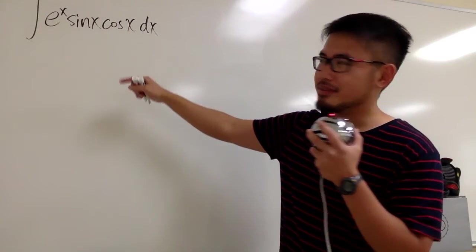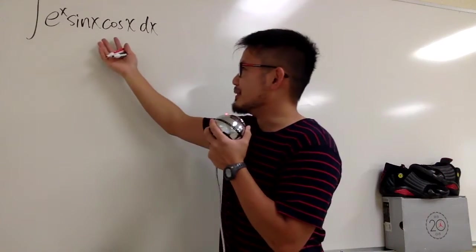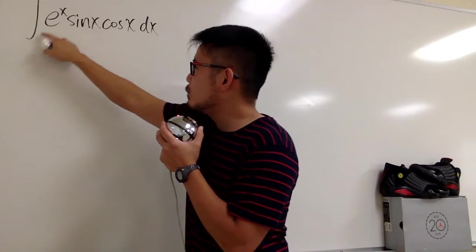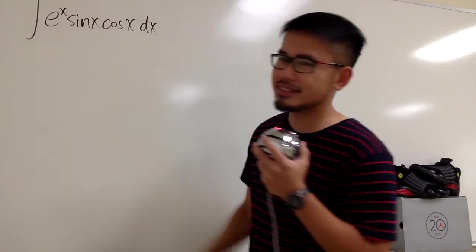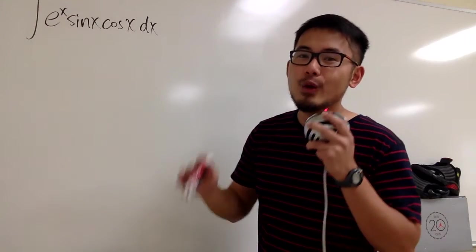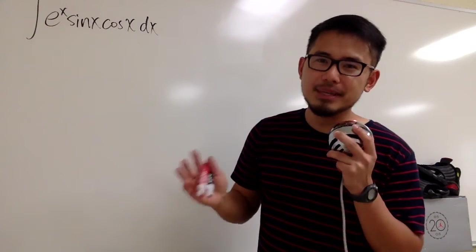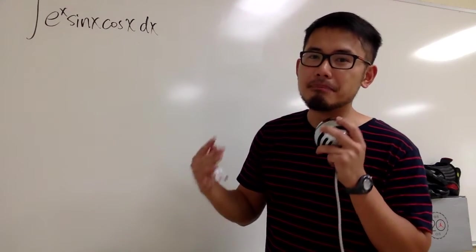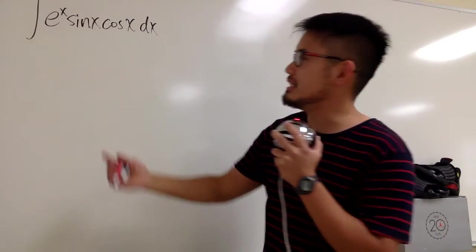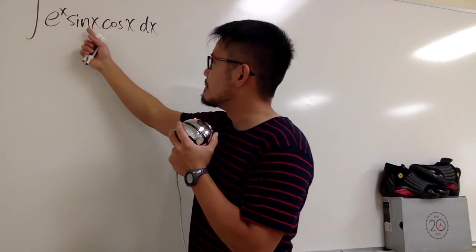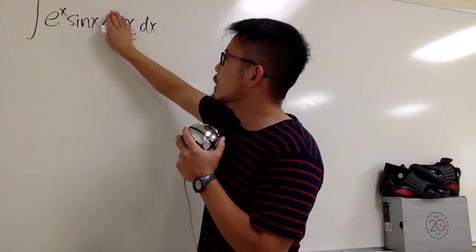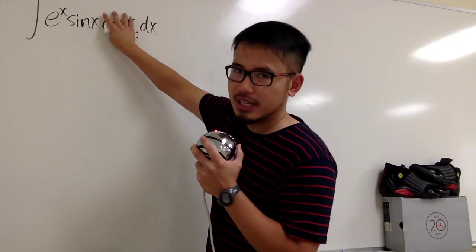This integral should be crazy enough, at least by the look. We have the integral of e to the x times sine x times cosine x. We have done a similar integral in the past, but it was just the integral of e to the x times sine x — there was no cosine x.